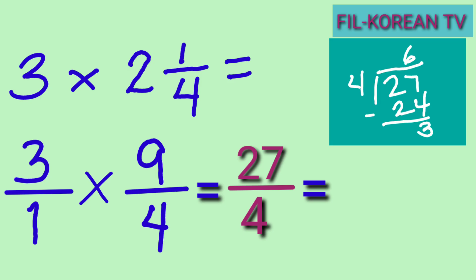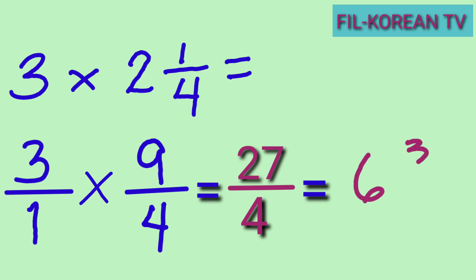To write the answer, the quotient six is the whole number and the remainder three is the numerator and the divisor is the denominator. So the answer is six and three-fourths.